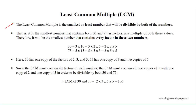The least common multiple is the smallest or least number that will be divisible by both numbers. That is, if we consider 30 and 75, then it is the smallest number that contains both 75 and 30 as factors, and it will be the smallest number that contains every factor in these two numbers.